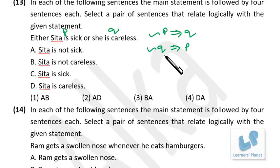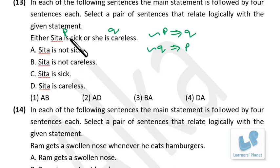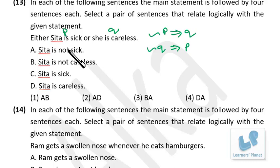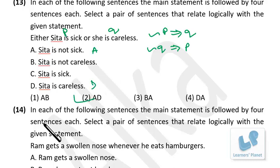Checking the options: Option A says Sita is not sick — that is negative P. If negative P, then Q must be positive, meaning she is careless. So 'Sita is not sick' and 'she is careless' — the A-D combination is correct. No need to check further.